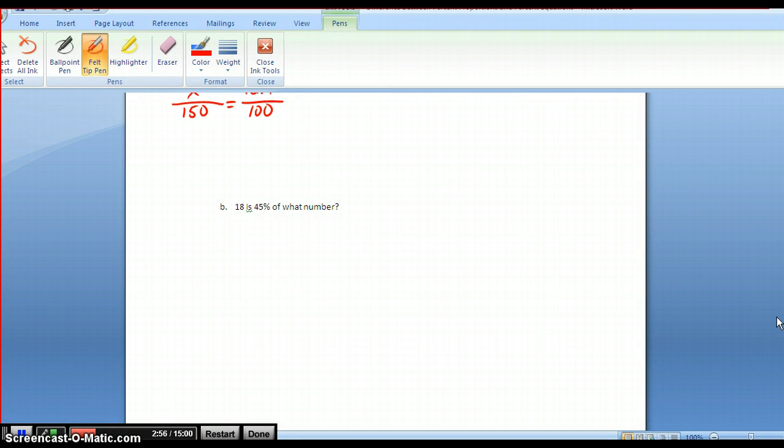This one, using proportions: 18 is—there's my 18 over of what. I don't know what that is. Equals my percent over 100, which is 45 over 100. I would cross multiply and solve for x.